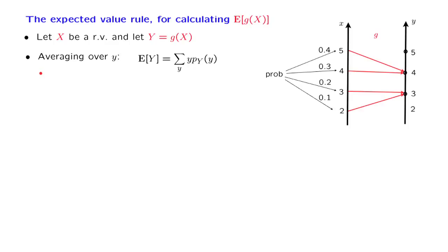So in this case, we start with y equal to 3, which needs to be multiplied by the probability that y is equal to 3. What is that probability? Well, y is equal to 3 if and only if x is 2 or 3, which happens with probability 0.1 plus 0.2.